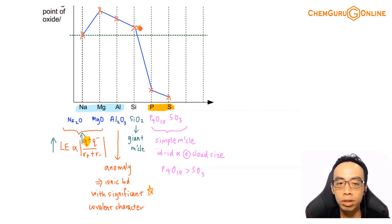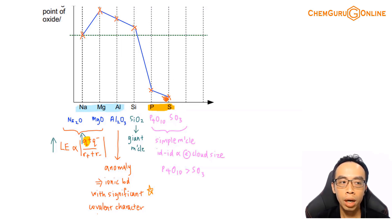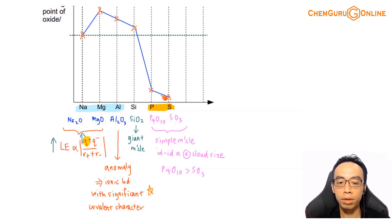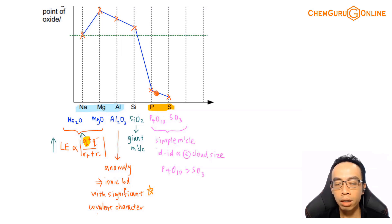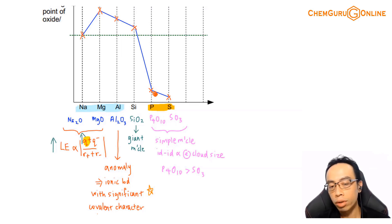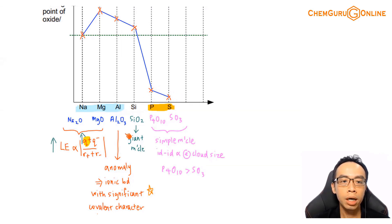We just need to remember that. For P₄O₁₀ and SO₃, both are simple molecules, and the factors affecting their melting point are electron cloud size. P₄O₁₀ is clearly significantly bigger than SO₃, so it will have a bigger electron cloud, is more polarizable, and therefore the melting point will be higher. A stronger induced dipole–induced dipole (IDID) interaction means a higher melting point for P₄O₁₀ versus SO₃.